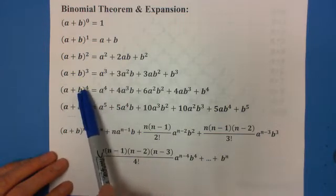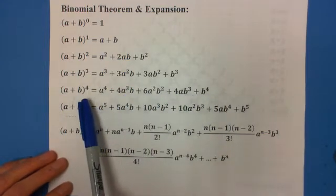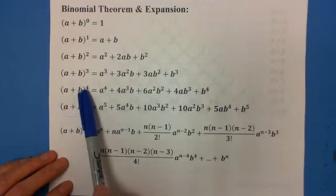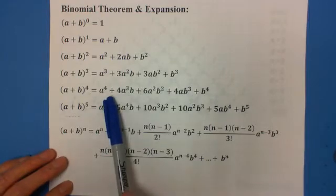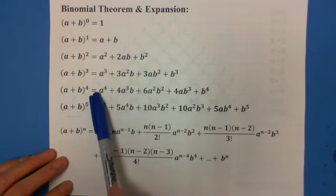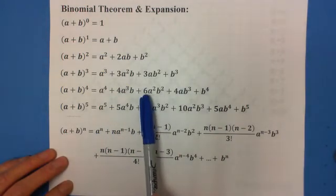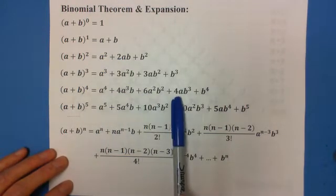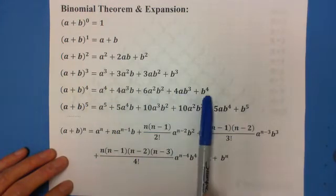There are five terms: 1, 2, 3, 4, 5. The first term is a to the 4th exponent. The last term is b to the 4th exponent. The coefficients: the first term is 1, second term is 4, third term is 6, fourth term is 4, last term is 1. So 1, 4, 6, 4, 1.